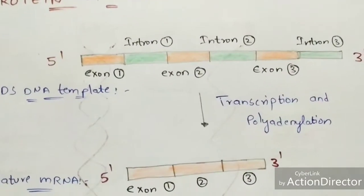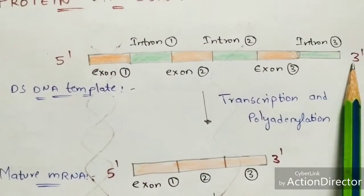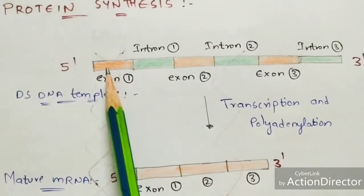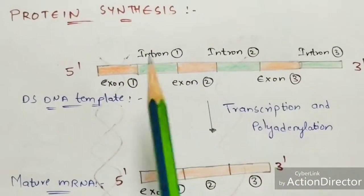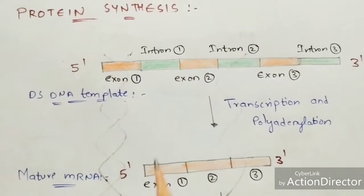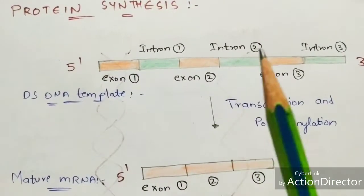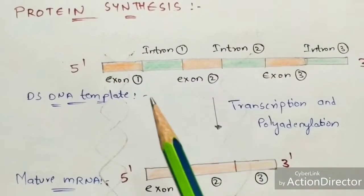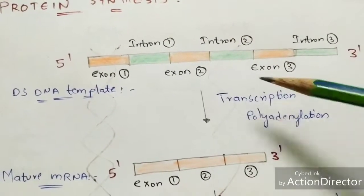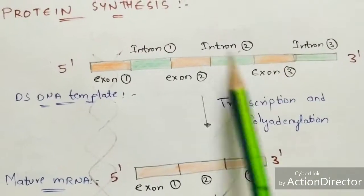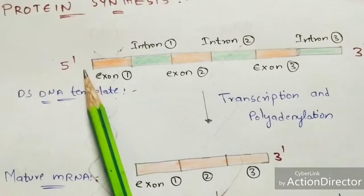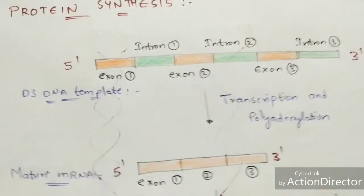Protein synthesis occurs from the double-stranded DNA template, which consists of 5' and 3' ends. It also consists of exons and introns — the orange colored regions are exons (exon 1, exon 2, exon 3) and the green colored regions are introns (intron 1, intron 2, intron 3).